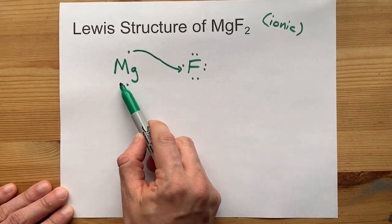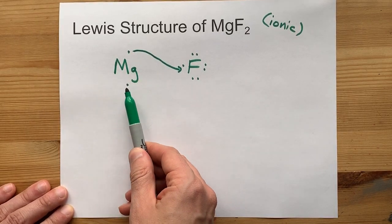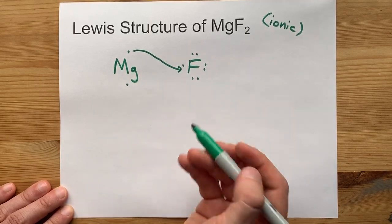Magnesium as a metal wants to give away all of its outer shell electrons, though, and it still has one. Where is it going to give that electron away to?